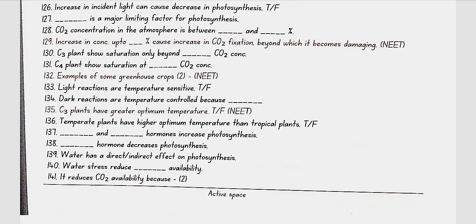C4 plants have a greater optimum temperature than C3 plants. Tropical plants have higher optimum temperature than temperate plants. Cytokinin and gibberellin hormones increase photosynthesis, while abscisic acid decreases photosynthesis. Water has an indirect effect on photosynthesis: water stress reduces CO2 availability because it causes closure of stomata and makes leaves wilt.